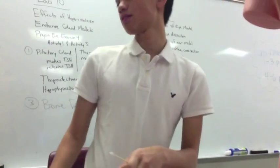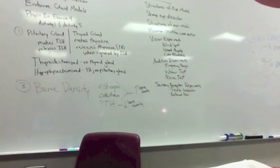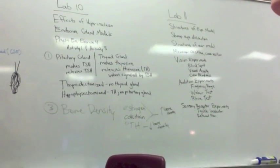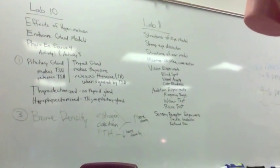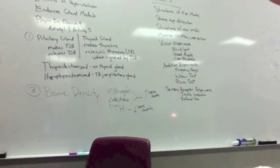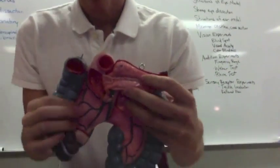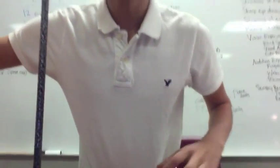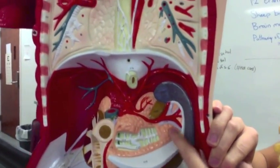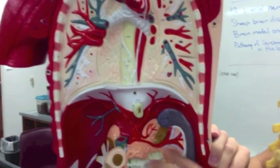We have the pancreas. I found it right here. This is your pancreas. It's right here in the area where your stomach would be, in the same area as your intestines. So that's the general area — your pancreas.